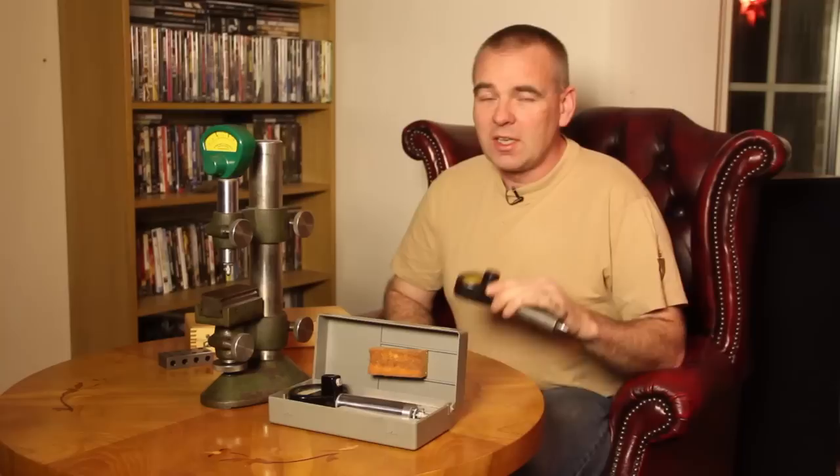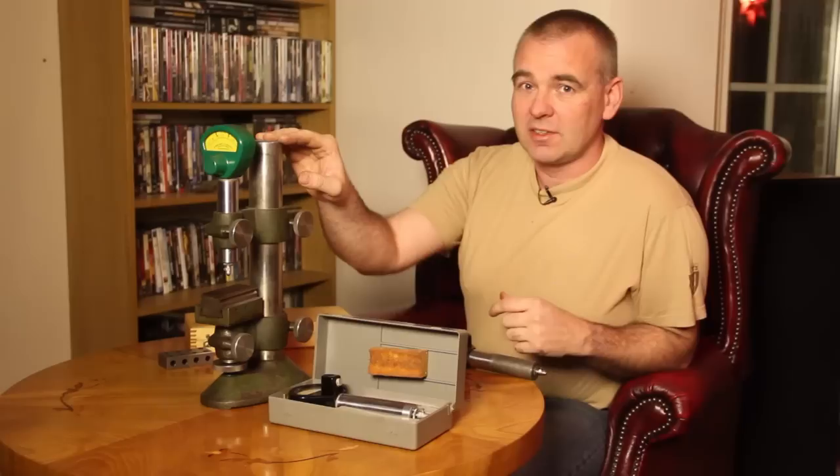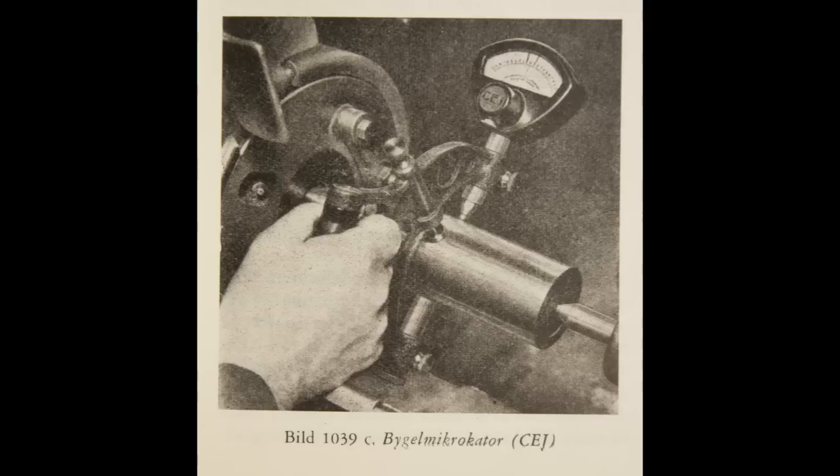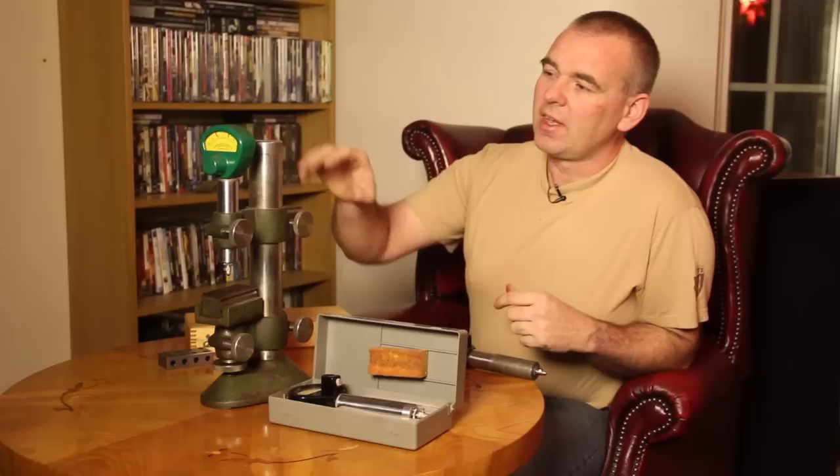The Mikukato can't really be used on its own. The most common accessory is a stand like this one. There's also a lot of other different accessories, for example holders for measuring round stock and a lot of stuff like that. There's also higher stands for measuring bigger things.